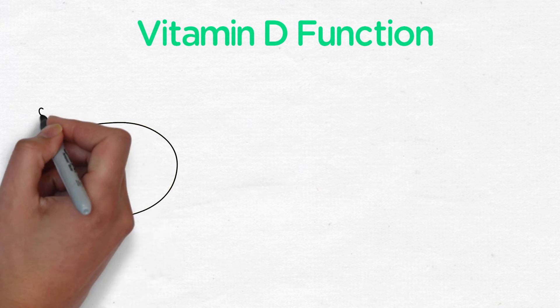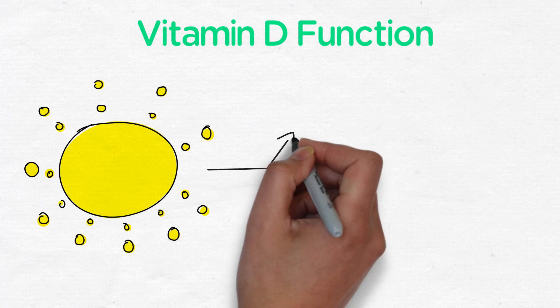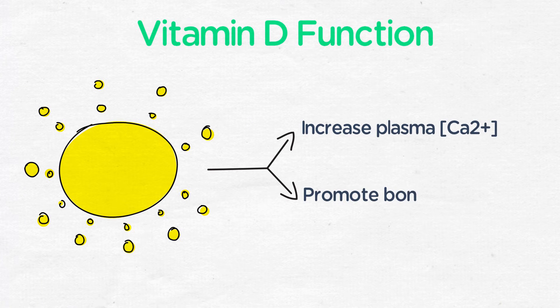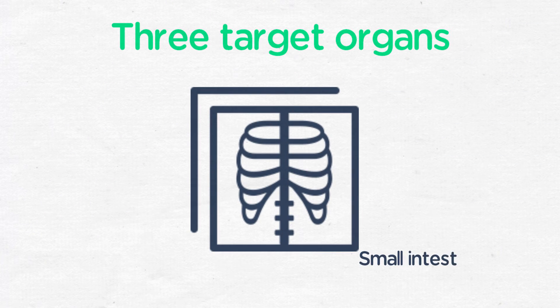Activated vitamin D has as an overall function to increase plasma calcium and promote bone mineralization. It does this through action upon three main target organs: the small intestine, kidneys, and bone.